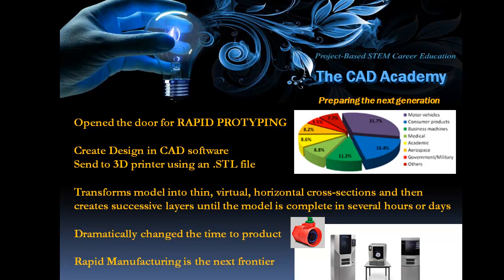This opened the door for something called rapid or quick prototyping. In the past, when someone came up with an idea for a new mechanical part, they would have to spend a lengthy time making drawings of it, send it off to a manufacturer, and it was very costly to make just one object. But with stereolithography printers, we create a designer idea in our CAD software and then print it using a special file called an STL file — a stereolithography file — out to our 3D printer.